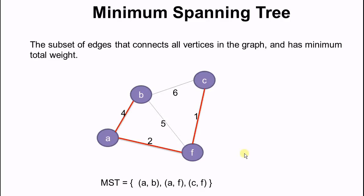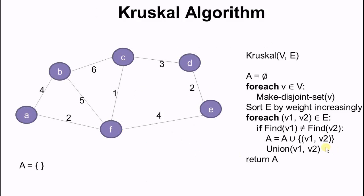So the problem we want to solve is: given a graph with weighted edges, find its minimum spanning tree. Today we'll use Kruskal's algorithm to find the minimum spanning tree, and it utilizes disjoint sets. Recall that disjoint sets has two operations: find and union. Find will take an item and return the disjoint set that item belongs to, and union will merge the two disjoint sets of two items into one disjoint set.